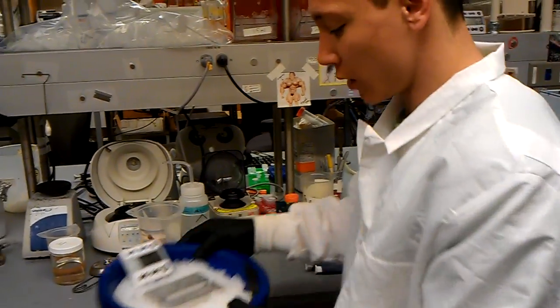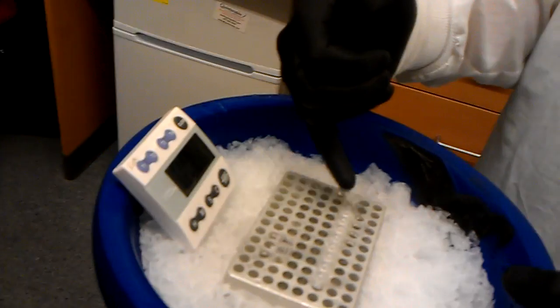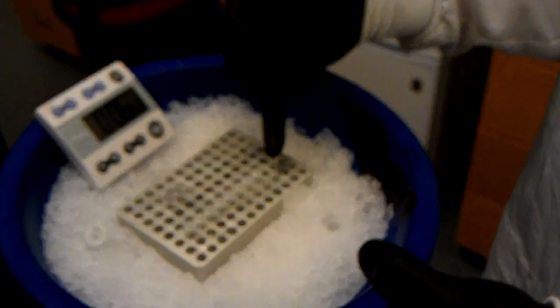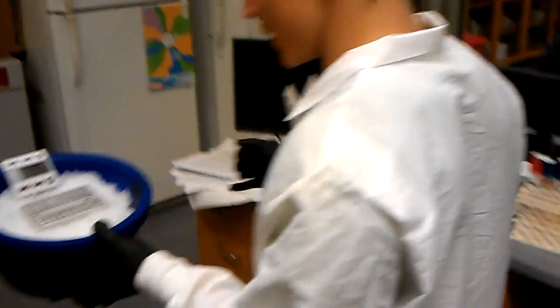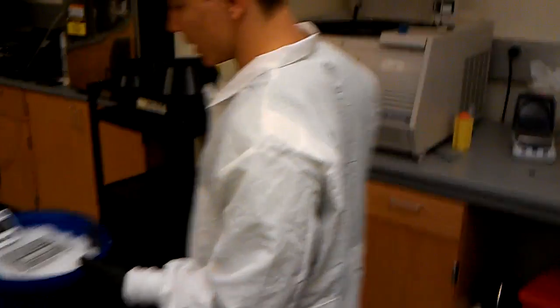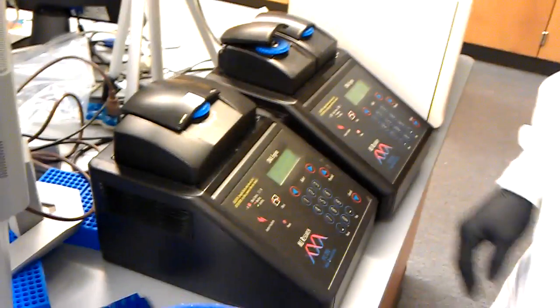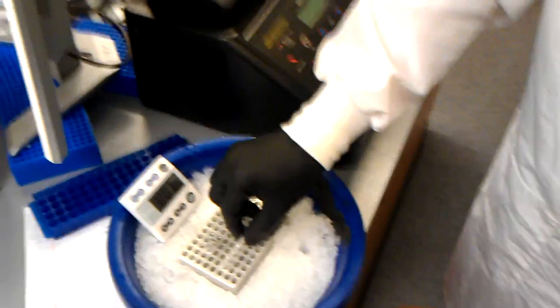So we have our nine small-scale competent cell preps that we're going to be transforming, and then just two other things. But this is, again, just the same as any other transformation. We're doing a 42-degree heat shock. We're doing it in a slightly different format.